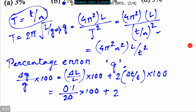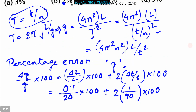Putting in the values: (Δl/l) × 100 = (0.1/20) × 100 = 0.5%, and 2 × (Δt/t) × 100 = 2 × (1/90) × 100 ≈ 2.22%. By simplifying, we get approximately 2.72%. So the percentage error in the value of g is 2.72%, and this is our answer.